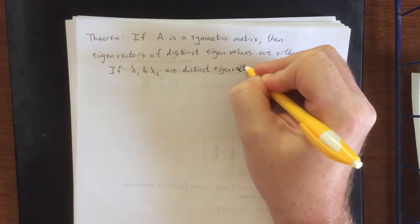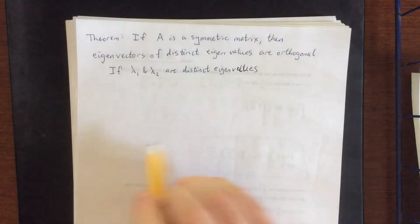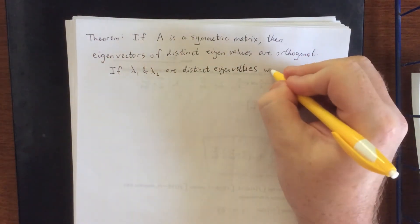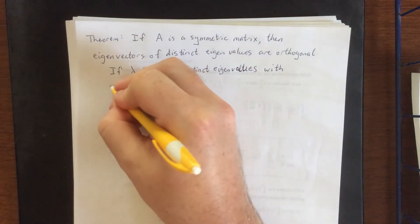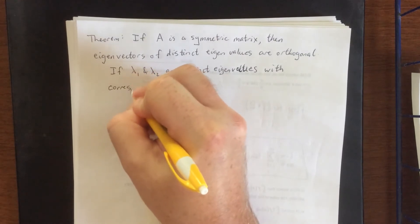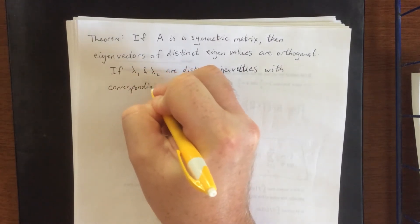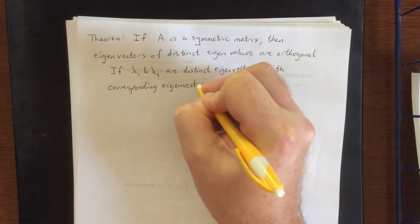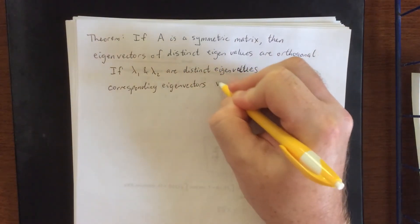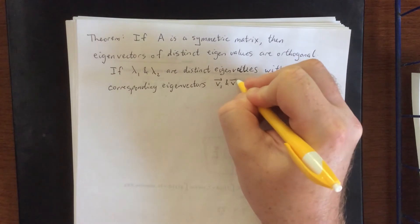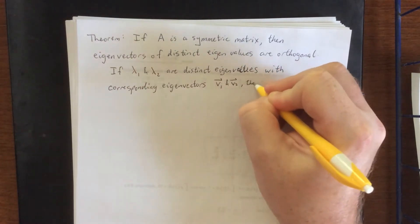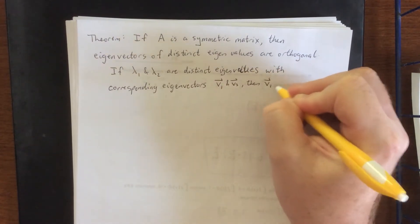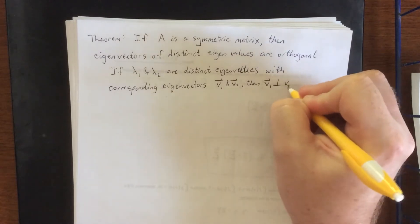I can hang on that's not how you spell eigenvalues, oh yeah, if they are distinct eigenvalues with corresponding eigenvectors V1 and V2, then V1 is automatically orthogonal to V2.